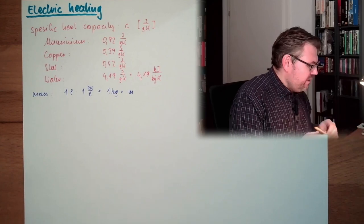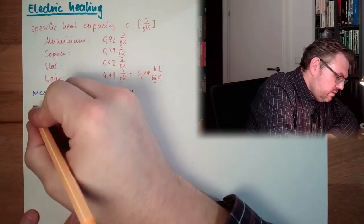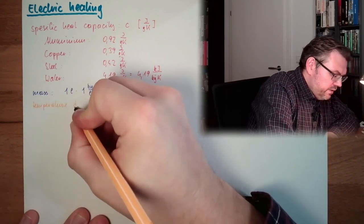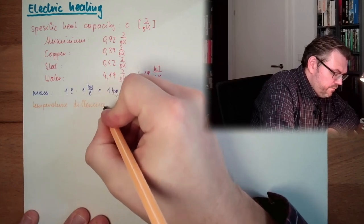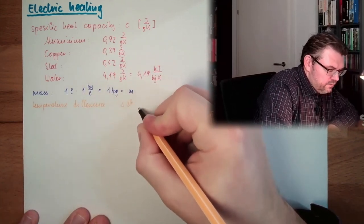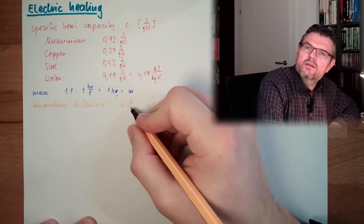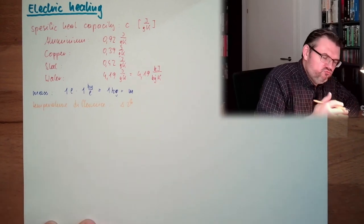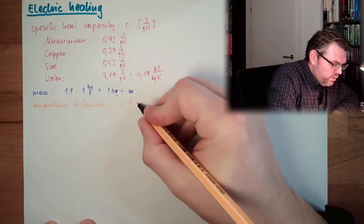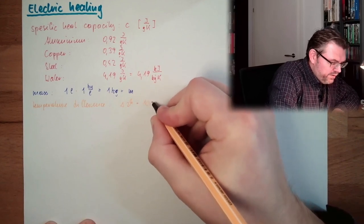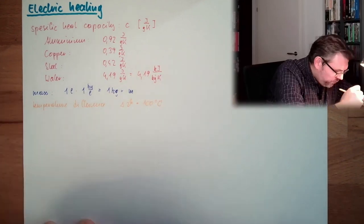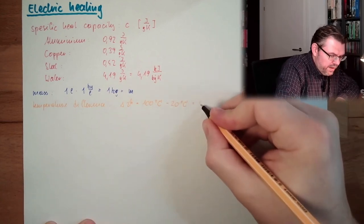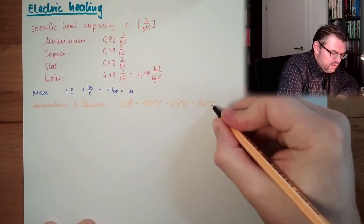And then we have the temperature difference. Delta theta. Theta is a Greek letter. Theta is T in Greek. So, temperature T. Delta theta equals I want to reach 100 degrees Celsius. Currently, I have 20 degrees Celsius. So, we're having 80 degrees Celsius delta theta.